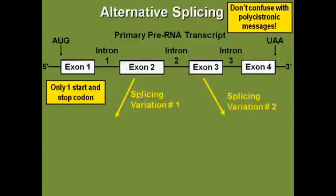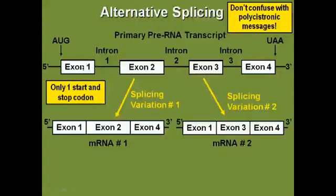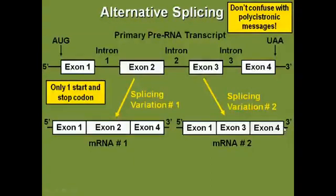You could have two different types of splicing variants. In variation one, exons one, two, and four come together — intron one, intron two, exon three, and intron three are all spliced out, linking exons one, two, and four. In another cell type, the same messenger RNA is spliced differently so that intron one, exon two, and intron two are spliced out in addition to intron three. In that cell type, exons one, three, and four come together. Splicing variant one has exons one, two, and four linked; splicing variant two has exons one, three, and four linked.